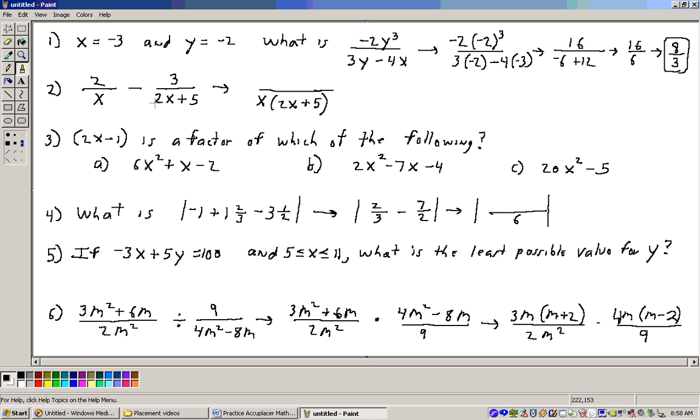So to subtract these, we've got to get a common denominator, and the common denominator will be x times 2x plus 5. And then we say, what's in this common denominator that's not in here? Well, a 2x plus 5. And we need to take this 2 times that 2x plus 5, minus 3 times whatever is not in this denominator, and that's an x.